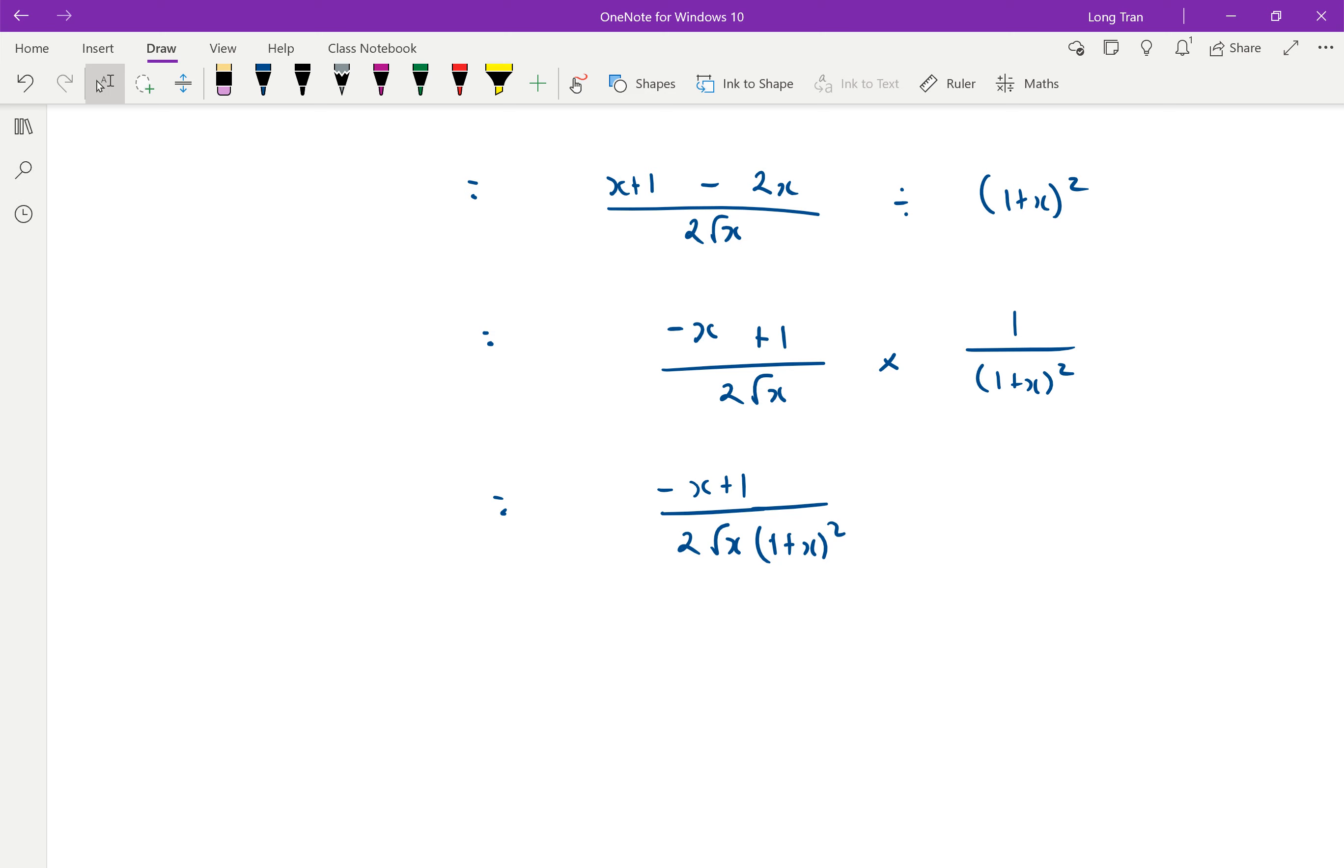But somehow they got rid of the root. They have a negative power on the top. How does that work? The only way for it to work is if you times it by root of x top and bottom.